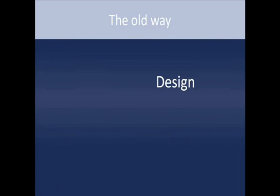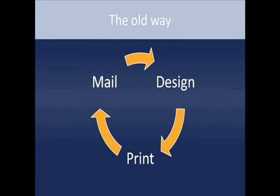The old process usually went like this: we design the collateral, we make sure it looks good, we send it to the printers, we make sure it looks good printed, then we mail it. We go through that process over and over again. Things work — we were able to survive in good economies this way.